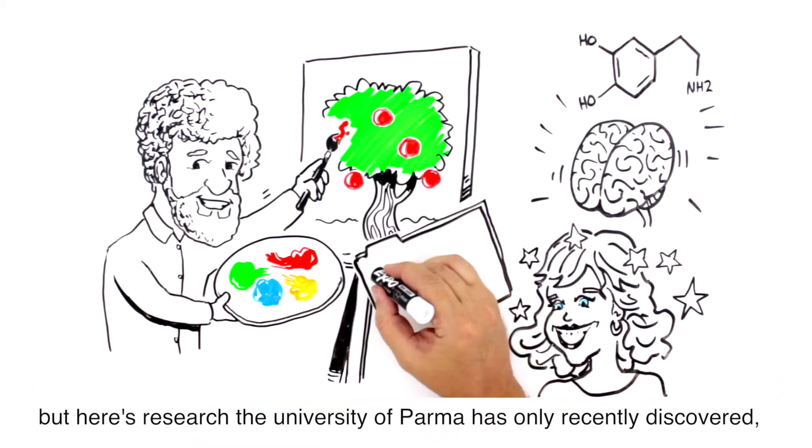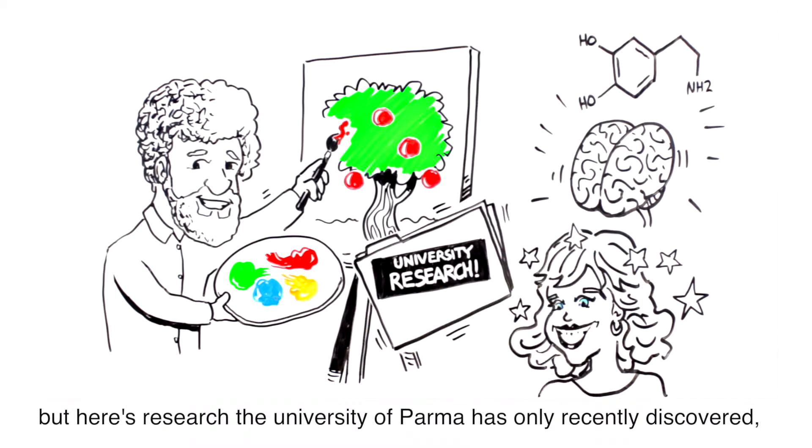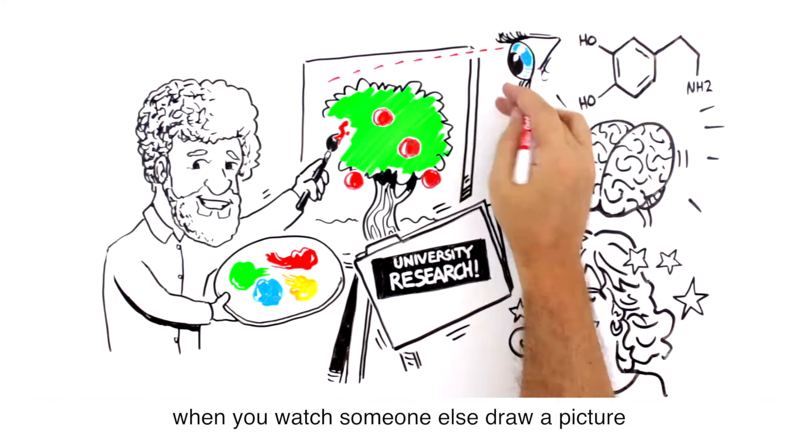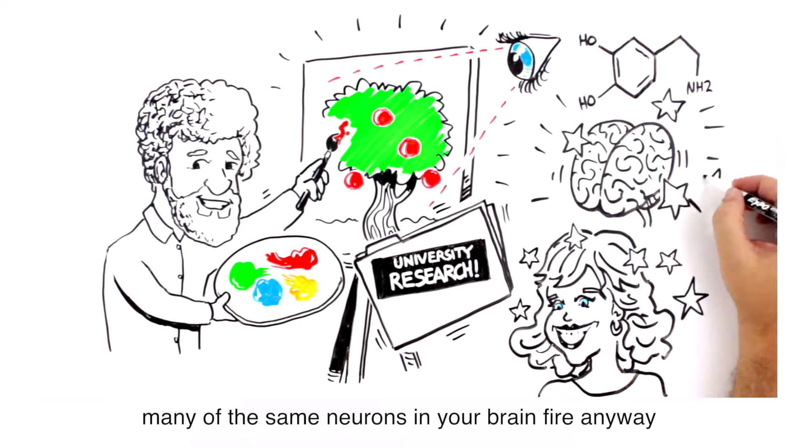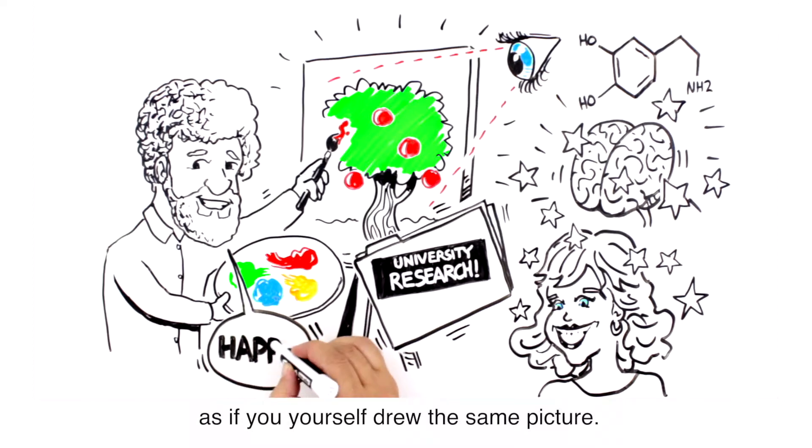But here's what research from the University of Parma has only recently discovered. When you watch someone else draw a picture, many of the same neurons in your brain fire anyway, as if you yourself drew the same picture.